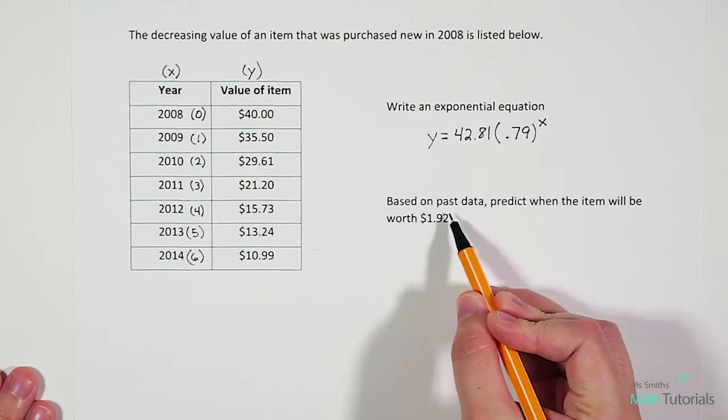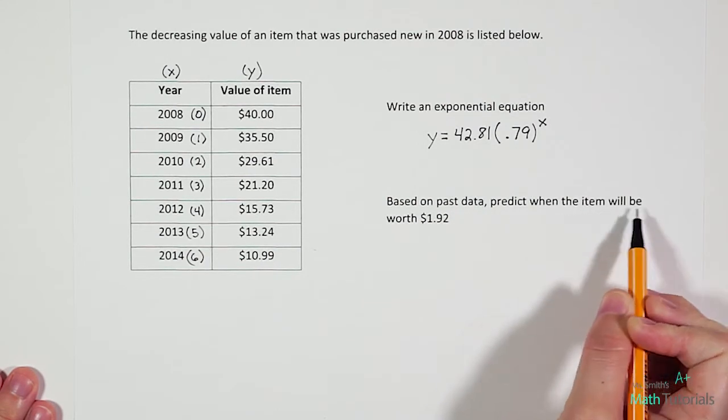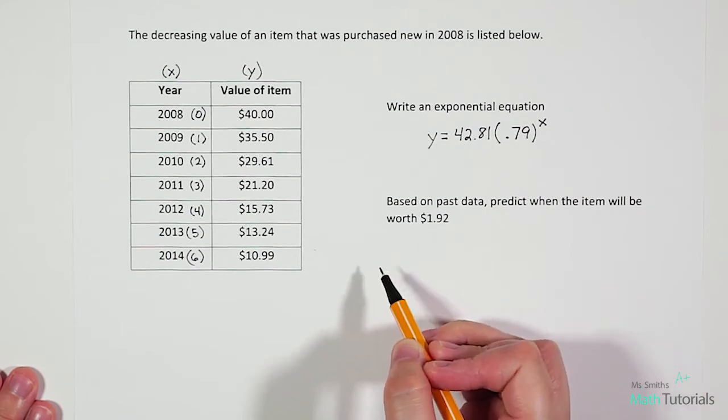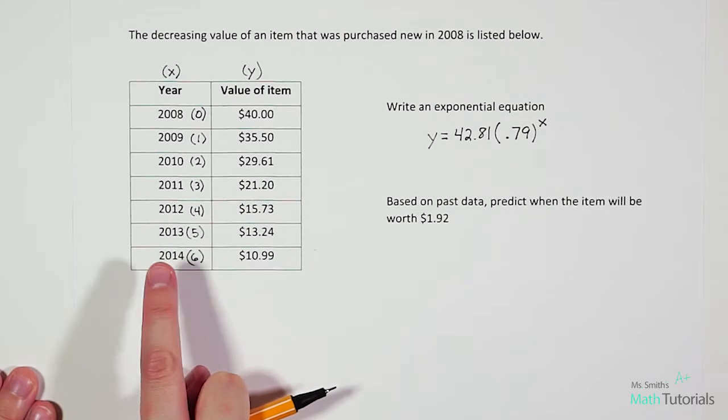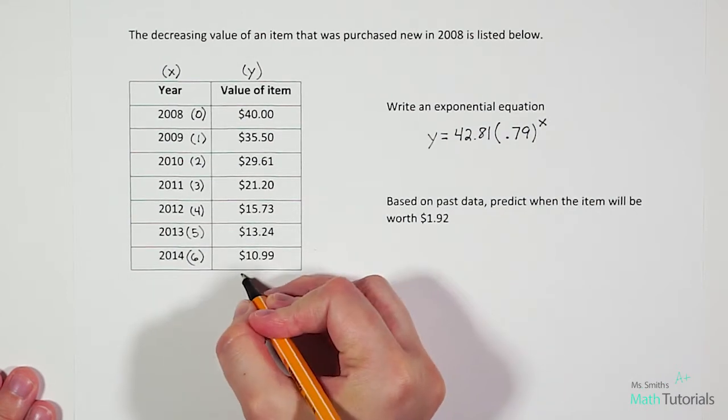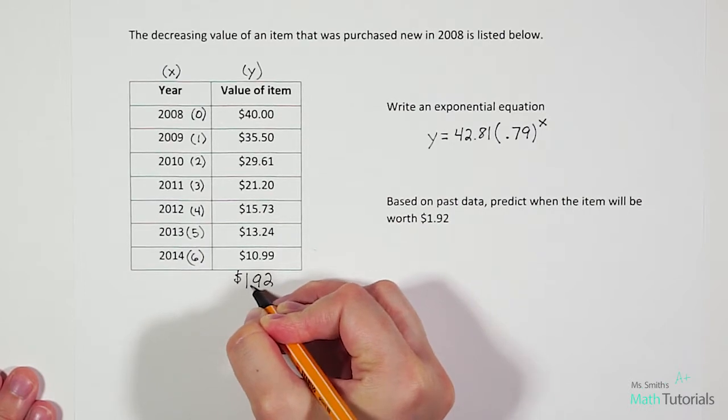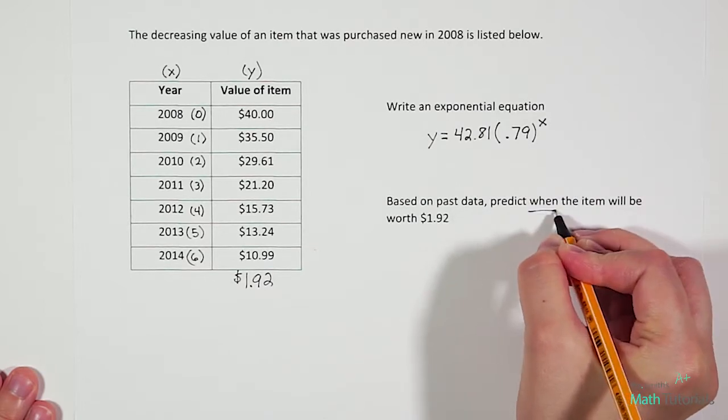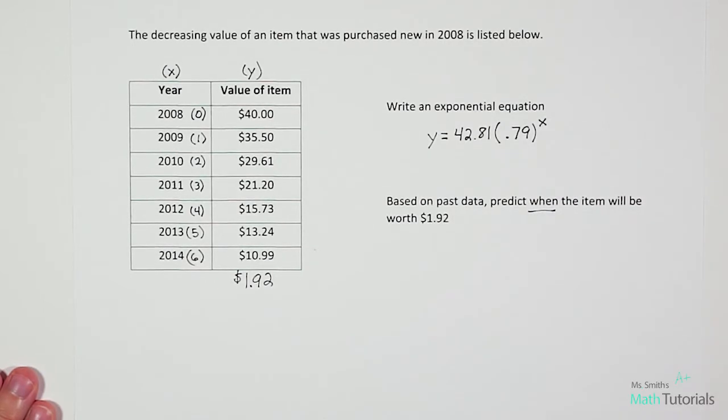Now they've said based on past data, predict when the item will be worth $1.92. So in the previous problem, they gave us the year, they gave us X, and asked us to find Y. In this problem, they've given us Y, $1.92, and they've asked us to find X because they say when. So we need to figure out what year our value would be $1.92.